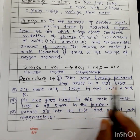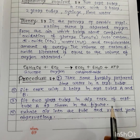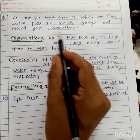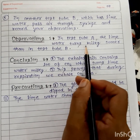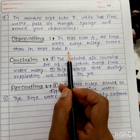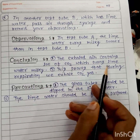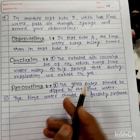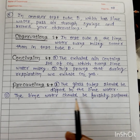Procedure: Take some freshly prepared lime water in a test tube. Fit a cork with two holes in test tube A and B. Fit two glass tubes into the cork of test tube A as shown in the figure. Exhale into the tube and record your observation, then pass air through test tube B using the syringe and record your observation. Observation: The lime water in test tube A turns milky sooner than in test tube B. Conclusion: The exhaled air contains lots of CO2, which turns lime water milky, proving that during respiration we exhale CO2 gas. Precaution: The glass tube should be dipped in the lime water and the lime water should be freshly prepared.